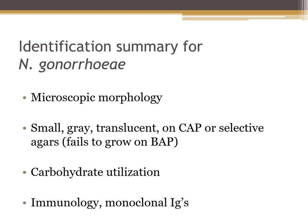To identify Neisseria gonorrhoeae: check gram stain for gram-negative diplococci, confirm it does not grow on blood agar but does grow on chocolate agar and modified Thayer-Martin. On chocolate agar it is small, grayish or tannish, and translucent. Carbohydrate utilization shows glucose positive in CTA sugars. Additional assays include the Bactacard enzyme substrate test and fluorescent labeled monoclonal antibody tests.